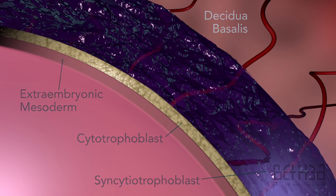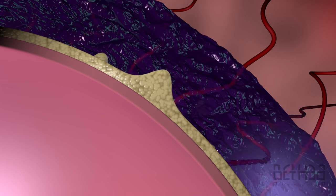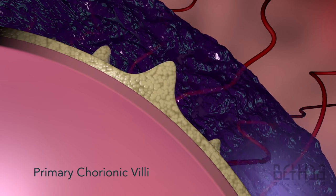Toward the end of the second week, small projections of the cytotrophoblast begin to expand into the syncytiotrophoblast, forming primary chorionic villi.